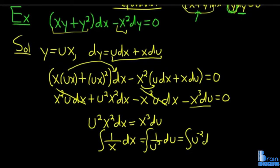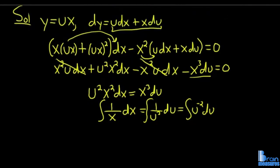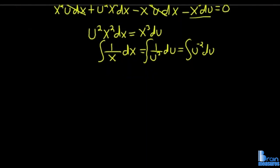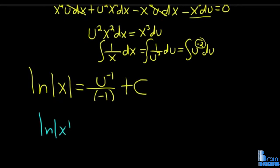Integrate both sides. We can rewrite the right side as u^(-2)du. Integrating the left side we get ln|x|. Integrating the right side we use the power rule: u^(-1)/(-1). Let's clean this up: ln|x| = -1/u + c.